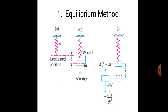First is the equilibrium method. The figure shows three images: the unstrained position, the equilibrium position, and the strained position. In the first case, only the single spring exists with no mass attached — that is called the unstrained position. In case B, the mass M is attached to the spring, producing a static deflection δ from the unstrained position. That is called the equilibrium position.